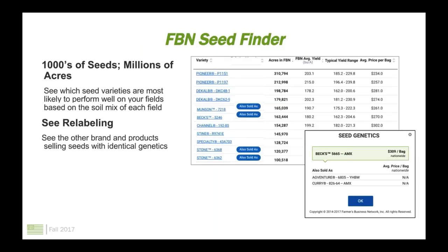First, SeedFinder. SeedFinder is our database of thousands of seeds with millions of acres worth of data. It's an incredibly powerful tool where you can see the yields associated with thousands of seeds, the prices associated with them, and how these seeds respond to variables like population rate and nitrogen levels. We've also recently added seed relabeling, where you can see if a product is sold under multiple brand names with identical genetics, so you can find the most efficiently priced products for the same genetics.